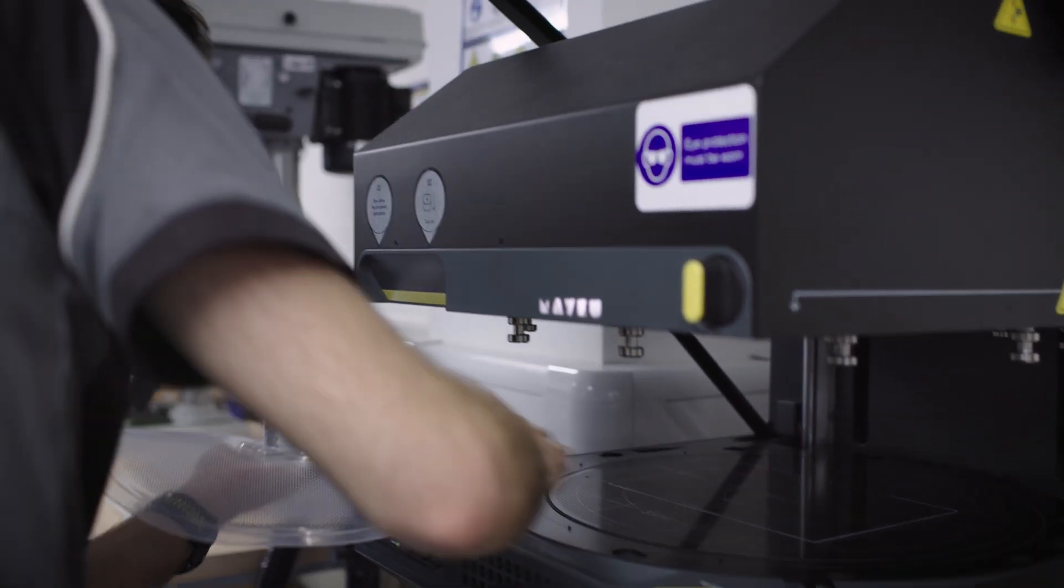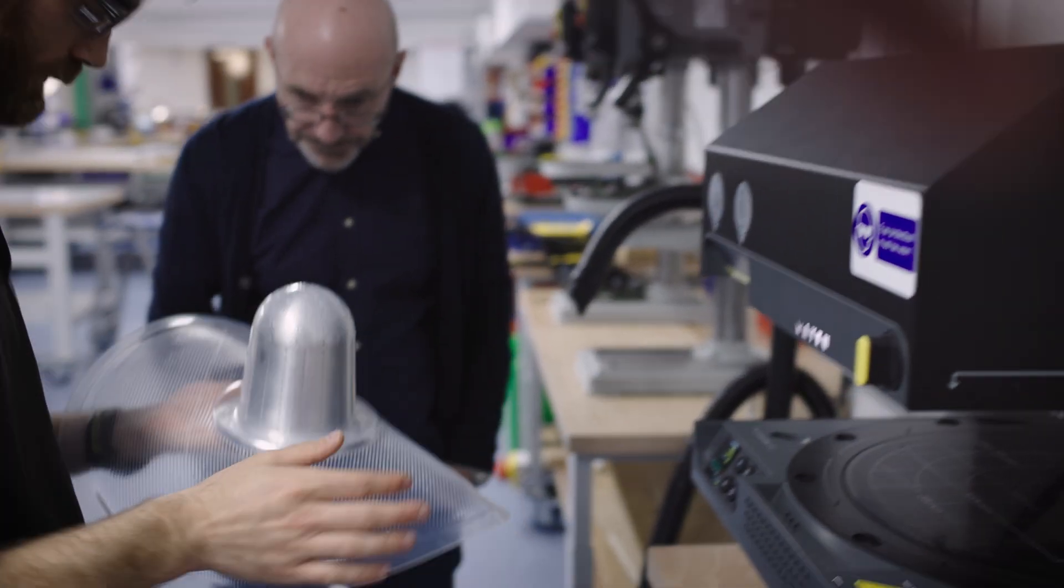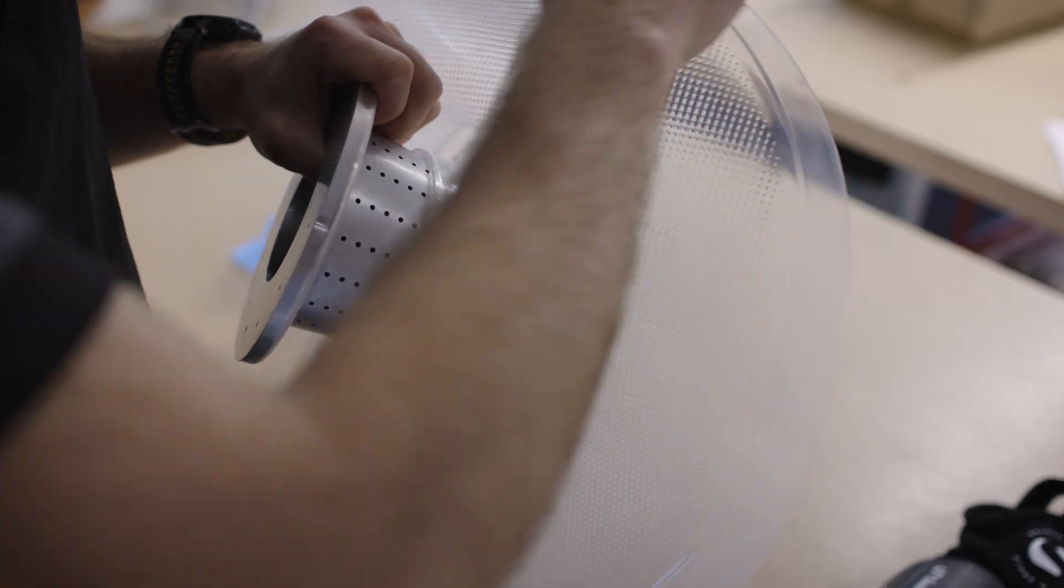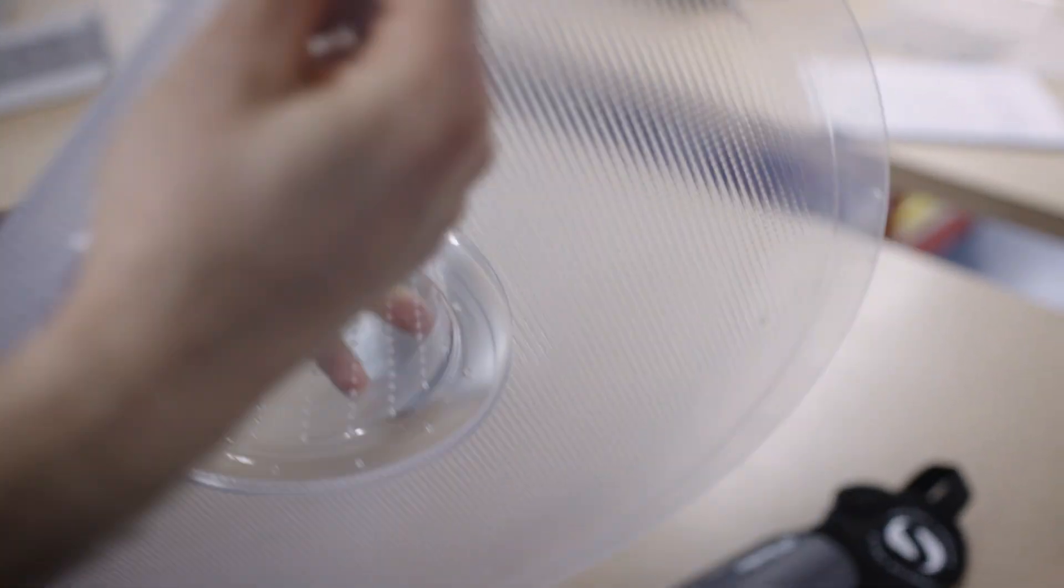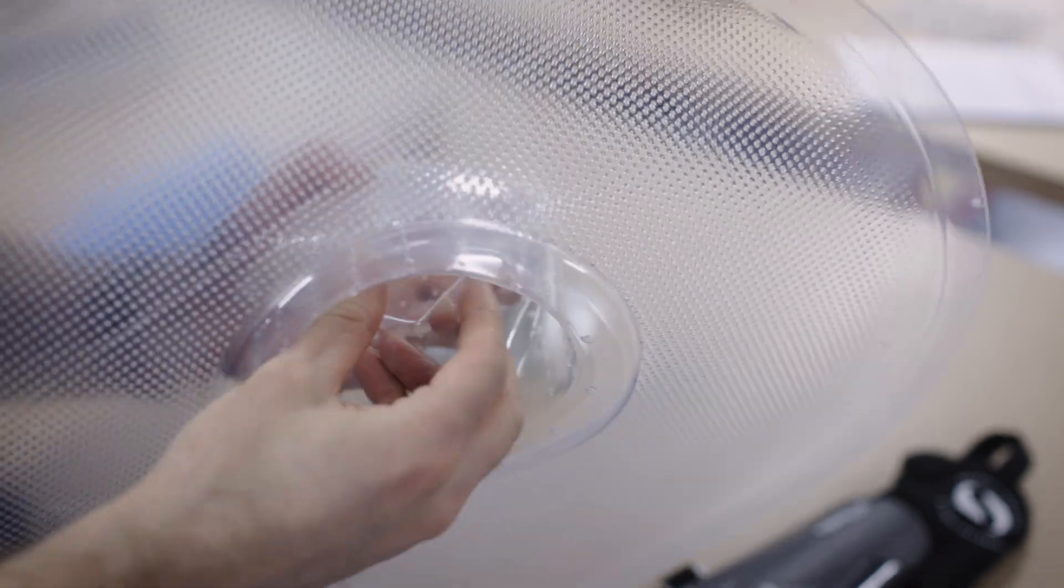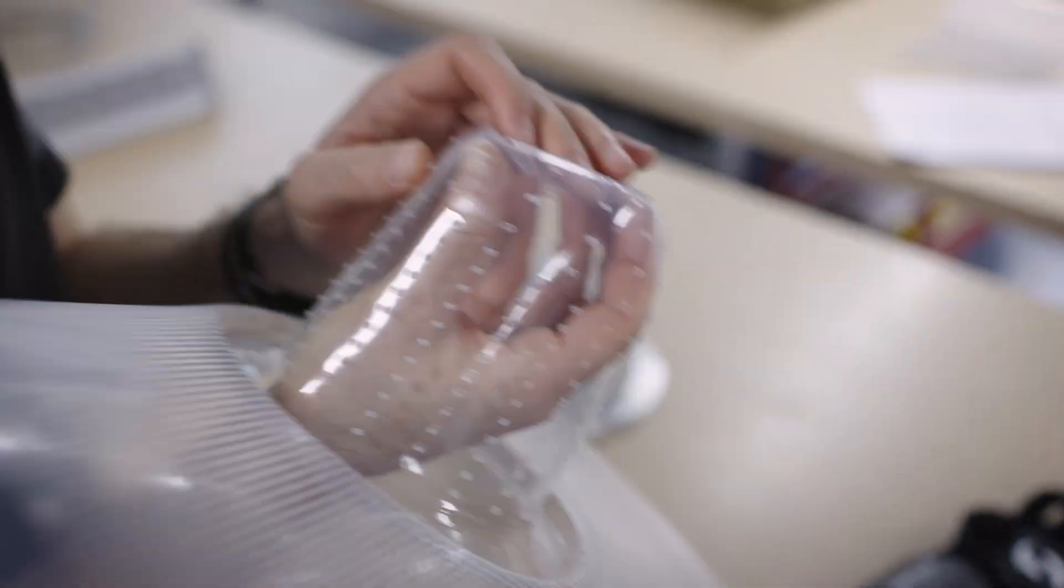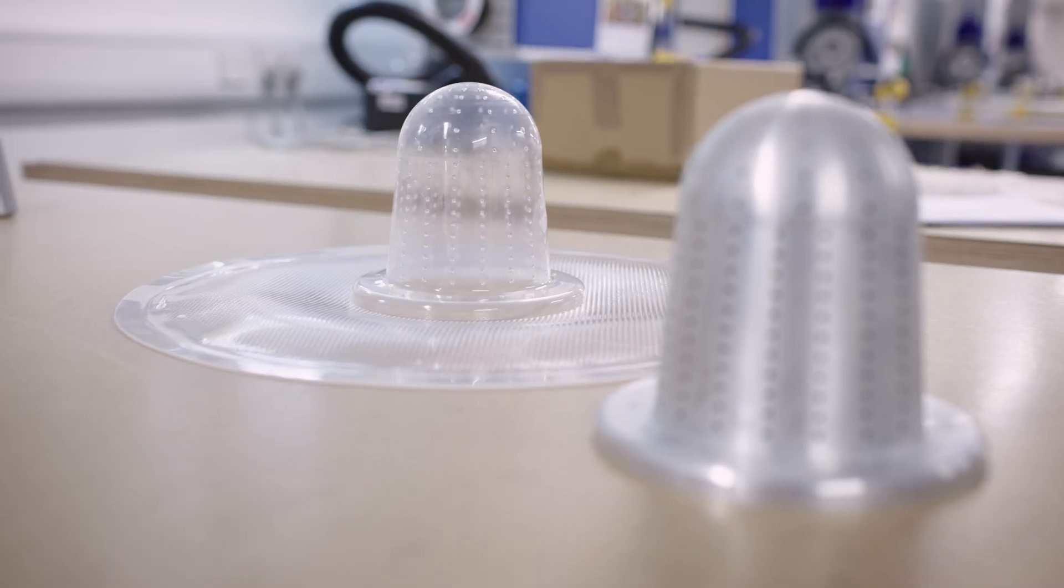The tooling for the prosthetic lower limb socket project, as well as it being a simplified version of what the socket would be in reasonable dimensions, provides a really challenging mold that we can use in the pressure former to really push it to its limits.